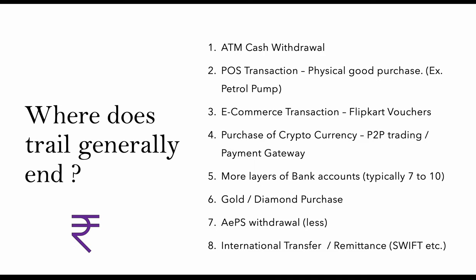Criminals can also purchase gold and diamonds from offline stores. APS is one recently discovered method, though the limit is ten thousand so the amount is small. Organized criminals may even transfer money outside India through SWIFT — directly to bank accounts in other countries. This is where the trail ends. So this is all about the forward trail — tracing money in the forward direction from where it was lost.